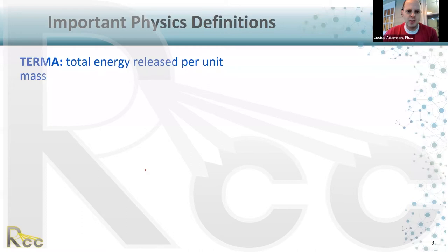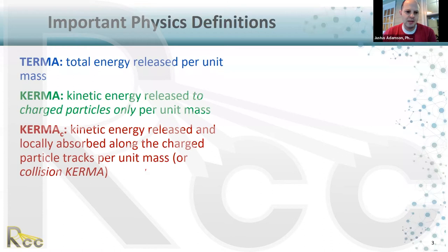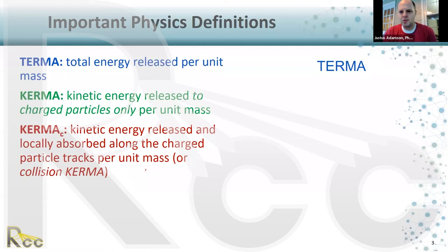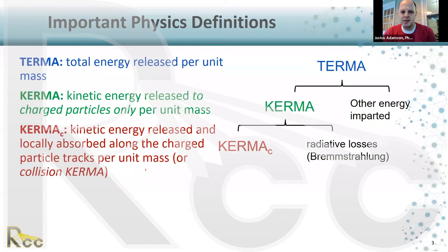The first key concept is TERMA — total energy released per unit mass. The second is KERMA — kinetic energy released to charged particles only per unit mass. Then there's collision KERMA, denoted KERMA-c, which is the kinetic energy released and locally absorbed along the charged particle tracks per unit mass. TERMA is divided into KERMA and other imparted energy; KERMA is further subdivided into collision KERMA and radiative KERMA.